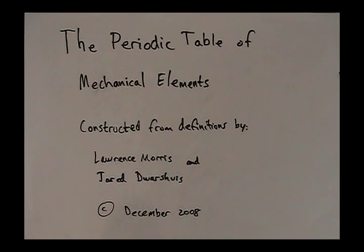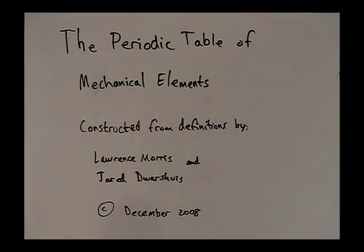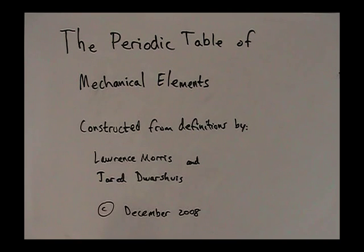We'll start by examining any particular box and describe the relationships that it has with its neighbors. Choose an element for a box on the grid. If you look at the neighbor to the left, that's a derivative with respect to time. And if you look at the one to the right, that's an integral with respect to time. If you look below, that's a derivative with respect to distance. And if you look above, that's an integral with respect to distance.